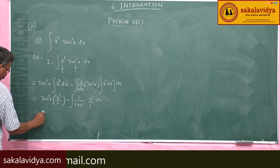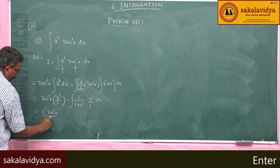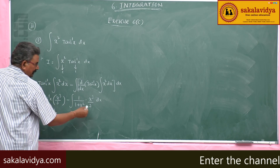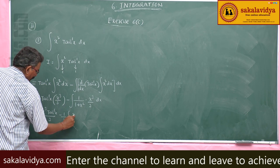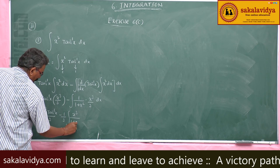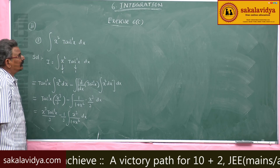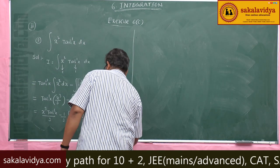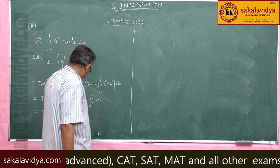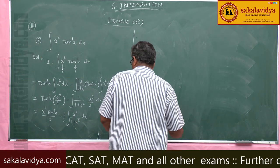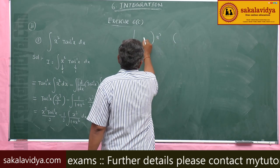Now, this simplifies to x cubed tan inverse x by 3, with 1 by 3 taken out, minus 1 by 3 times integral of x cubed by 1 plus x squared dx. We have to find out the integral of this function: x cubed divided by x squared plus 1.